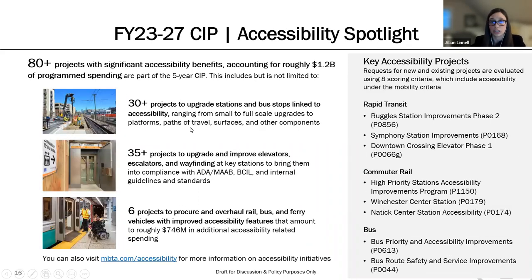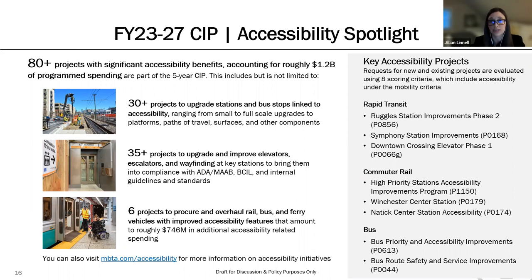Moving on, the CIP currently includes over 80 projects with significant accessibility investments, accounting for roughly $1.2 billion of program spending. This includes over 30 projects that will improve accessibility at MBTA stations and bus stops, including small and full-scale upgrades to platforms, paths of travel, and surfaces. There are also over 35 projects to upgrade and improve elevators, escalators, and wayfinding at key stations to bring them into compliance with ADA, MAAB, and BCIL standards.